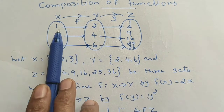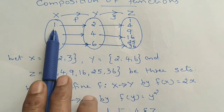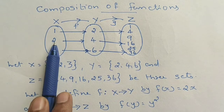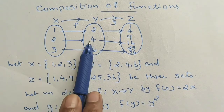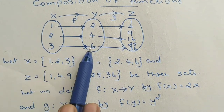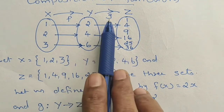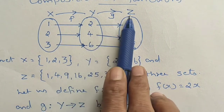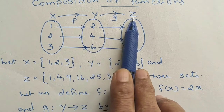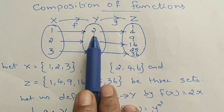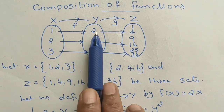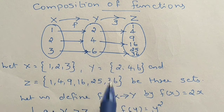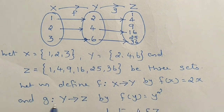This is 2x. The elements: 1 and 2 is 2, and 2 and 2 is 4, so 1 maps to 4. The function gives 3 and 2 as 6. In the function, g is the function of y. The function is different; the elements are 2, 4, 6.